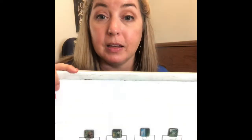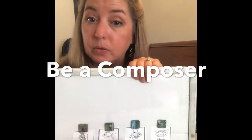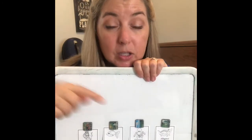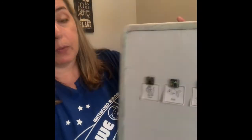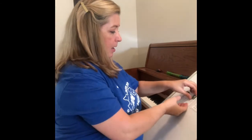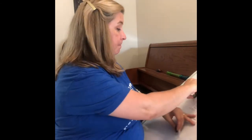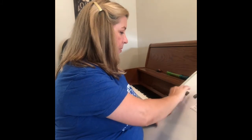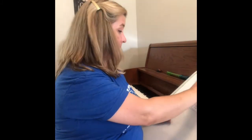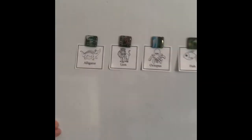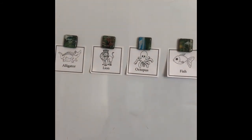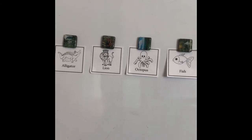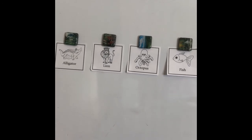Now guess what? It is your turn to be a composer. We are going to use these animal rhythms and make a brand new pattern. That's what composers do — they take notes and rhythms and rearrange them to make new patterns. So let's rearrange these. I think I want to put the fish at the end. And I think I'm going to put the alligator at the beginning, just because alligators are cool. We're going to say it in this order twice in a row without stopping in between, so get ready to pat or clap and say these rhythms twice in a row.